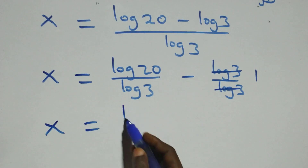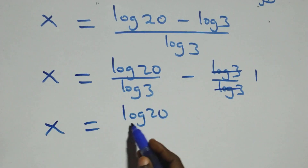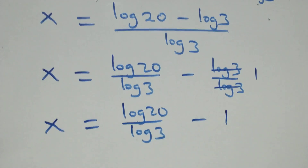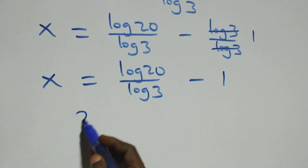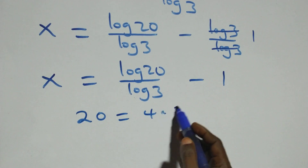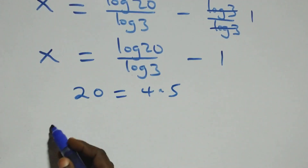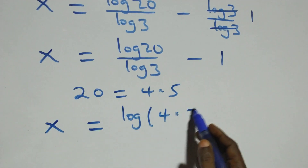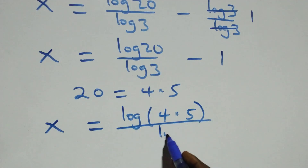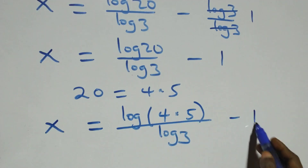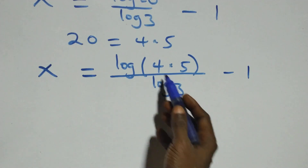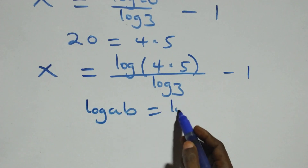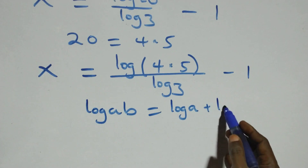So x equals log 20 over log 3 minus 1. Also, we can write 20 as 4 times 5, which gives us x equals log(4 times 5) over log 3 minus 1. This follows from the rule that log(a times b) is the same as log a plus log b.